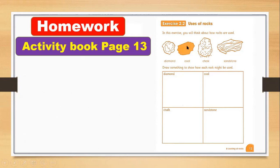We use coal to make fire. We use chalk to write, so you have to draw a chalk — we can use this rock to write on a blackboard. And here is sandstone: we can use it inside buildings. Sandstone is not very hard, it is a soft rock. You have to look at the rock and draw pictures showing how we use them in everyday life.